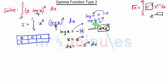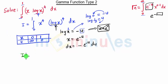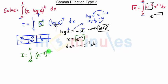We know that log of 1 upon 0 is nothing but infinity, so u is infinity. When we put x equal to 1, we get log of 1, which is nothing but 0. So these are the new limits: u goes from infinity to 0. Our new equation becomes i equals the integration from infinity to 0 of x raised to 4 — where x is e raised to minus u — so e raised to minus u, the whole raised to 4.